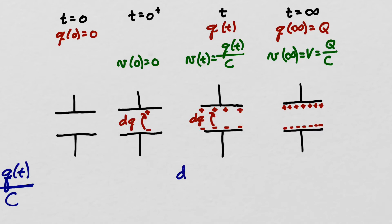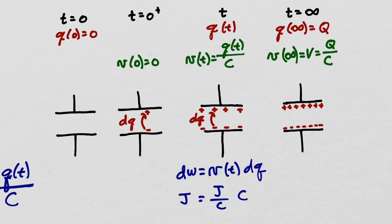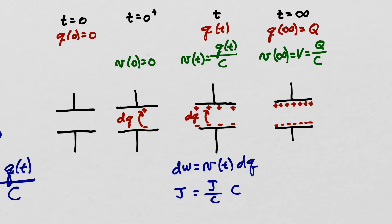The amount of work dW to move dq from the lower plate to the upper plate is the voltage across the capacitor times dq. The voltage is the number of joules per coulomb and dq is the charge in coulombs, so the product of those is the amount of work in joules. For the voltage, we can substitute the charge on the capacitor over the value of the capacitance. As the charge on the capacitor increases, it takes more and more work to move each dq because the electric field inside the capacitor is getting larger.